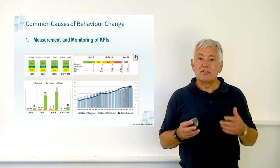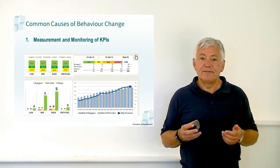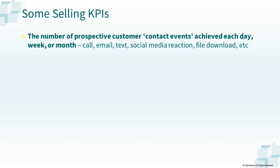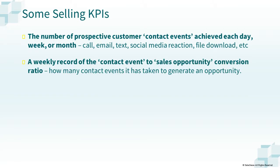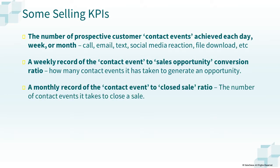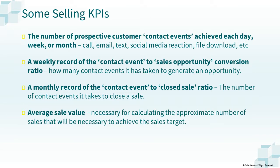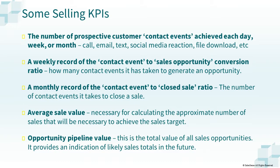Key performance indicators in selling include the number of prospective customer contact events achieved each day, week or month, a weekly record of the contact event to sales opportunity conversion ratio, a monthly record of the contact event to close sale ratio, and the average sale value and opportunity pipeline value. There are many more.